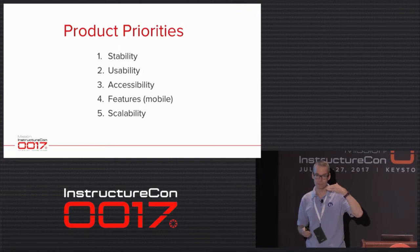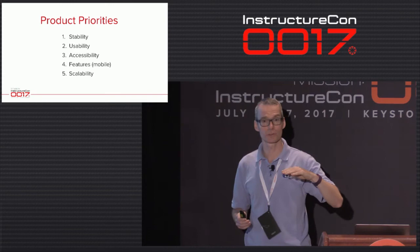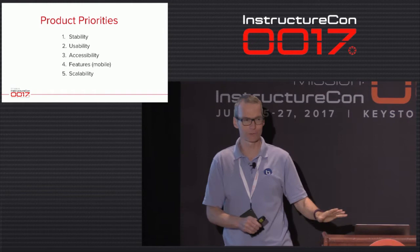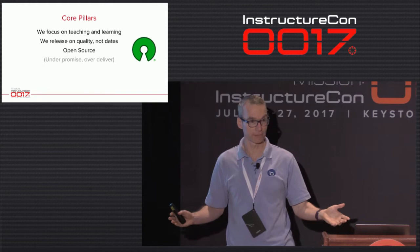With my product management hat on, there's a Maslow hierarchy of needs I look at: stability and usability are first and foremost, then accessibility, then features — focused towards pedagogy and engaging students online — and then scalability. In terms of where the product focuses its efforts, it's on teaching and learning. There are about 150 web conferencing systems on the market; we focus on one, and that's online learning.